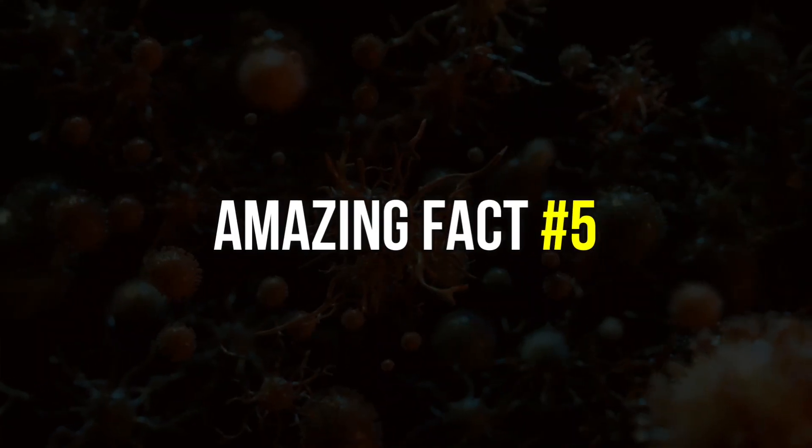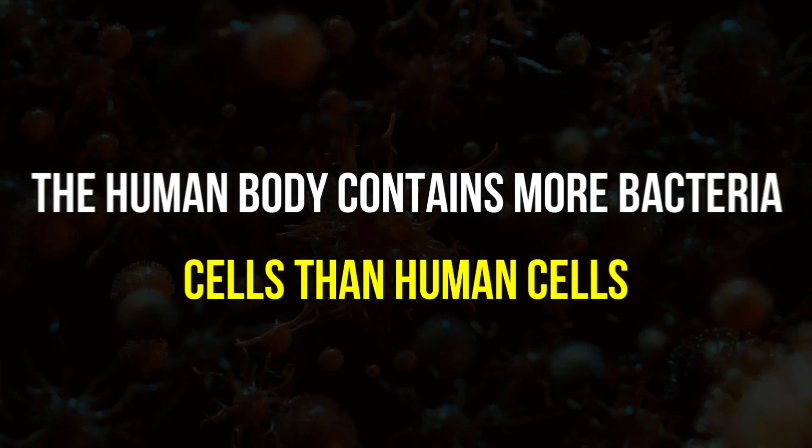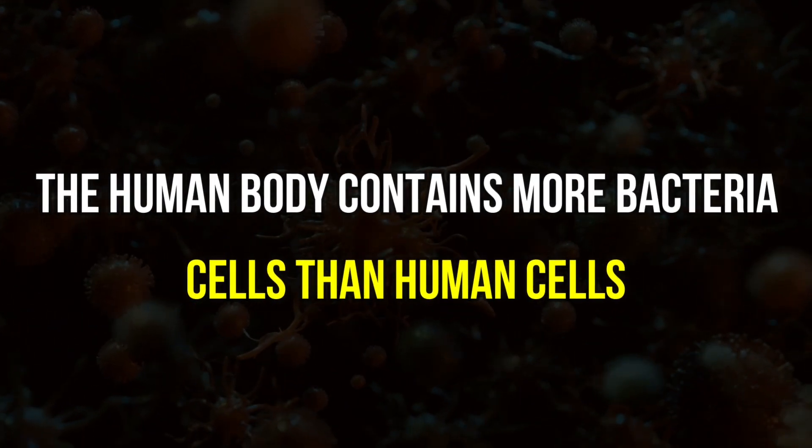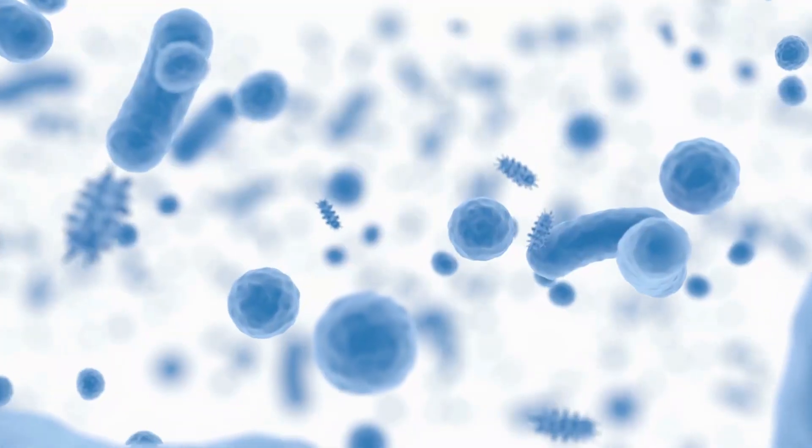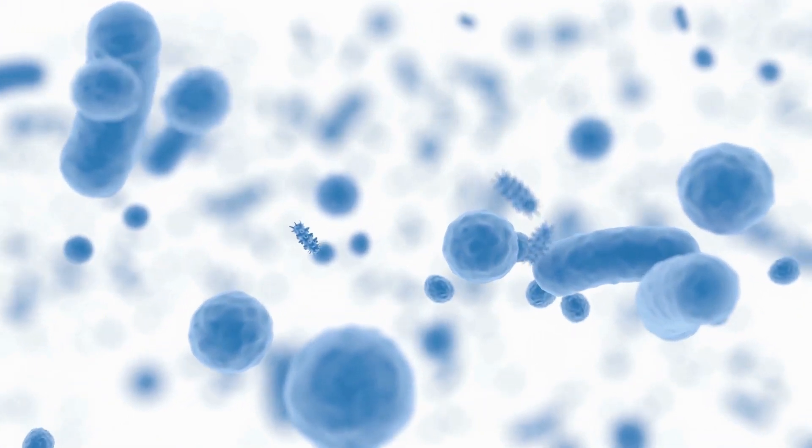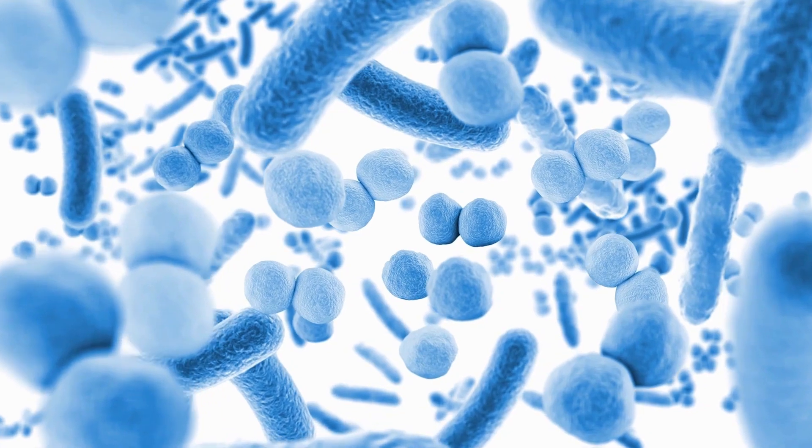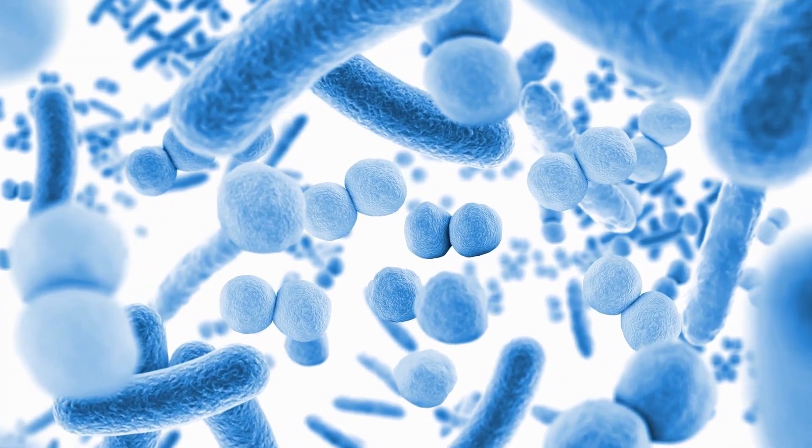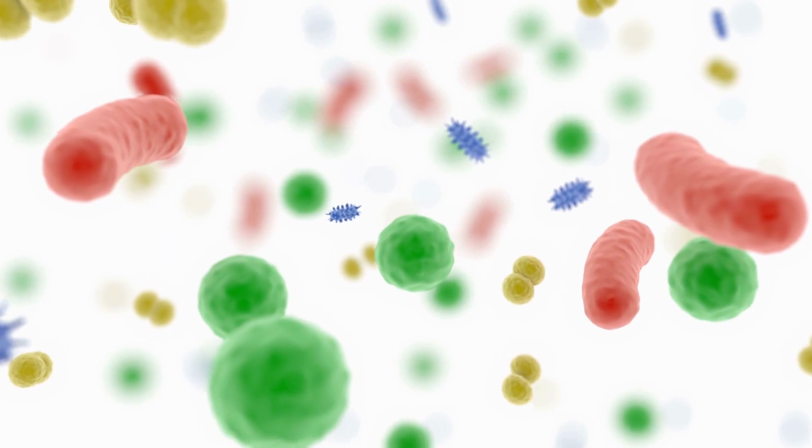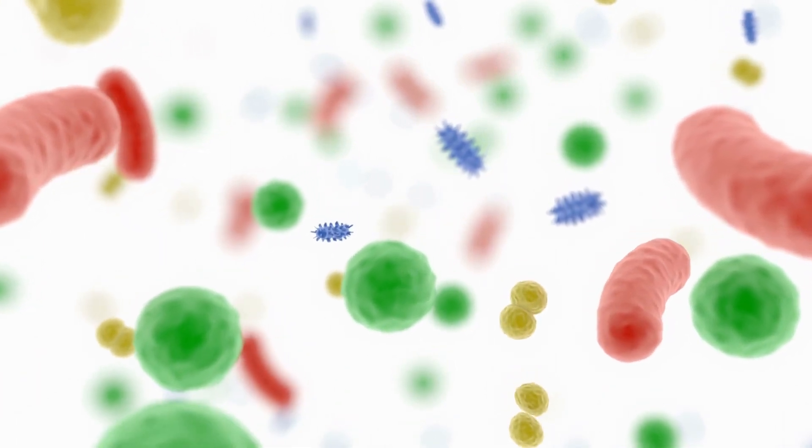Amazing fact number 5. The human body contains more bacterial cells than human cells. There are about 10 times as many bacterial cells as human cells in the human body. However, bacteria are much smaller than human cells, so they make up a much smaller percentage of the total mass of the body.